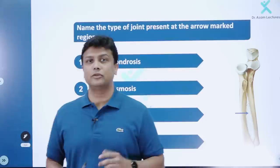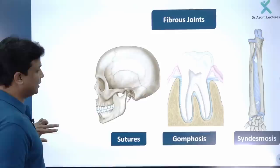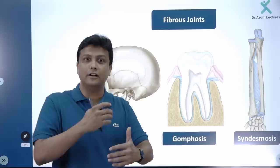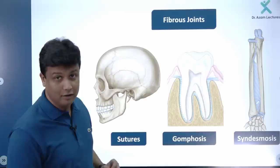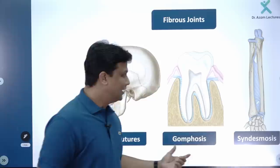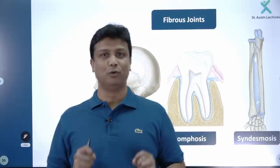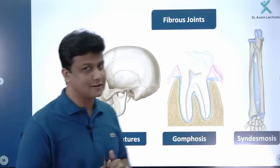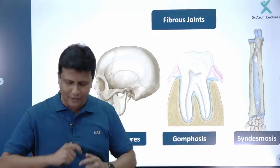There are three categories of joints: number one, fibrous joints (immovable); number two, cartilaginous joints (partially immovable); number three, synovial joints (completely movable). Fibrous joints are totally immovable and are divided into three subcategories: sutures — the joints between cranial bones; gomphosis — the joint between tooth and socket (remember 'gum' for gomphosis); and syndesmosis — the joint between two bones via a fibrous membrane, like the interosseous membrane between bones.